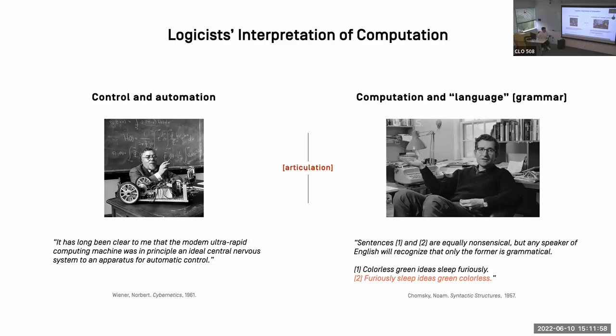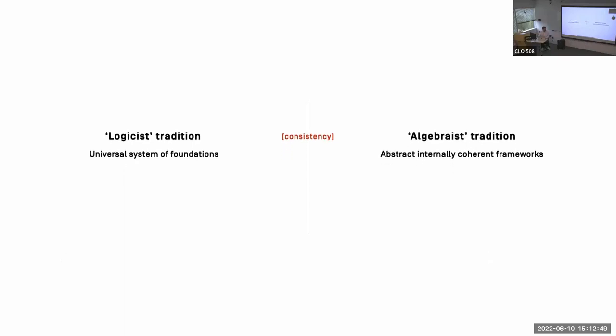And then you have Chomsky on the other side, who gives an example of two sentences, colorless green ideas sleep furiously, and furiously sleep ideas green colorless. Says both are kind of nonsensical, but only one is grammatical. So then this side says computation is about rules. The left one says it's about control, the right one says it's about rules. And my hypothesis is that all the prominent examples of computational modeling in architecture subscribe to either left or right side. So I would position them within the logicist tradition.